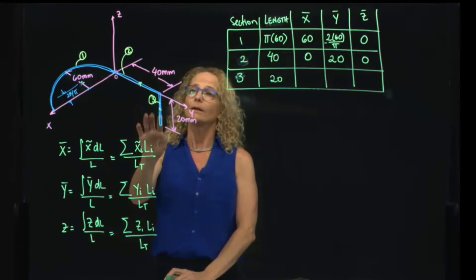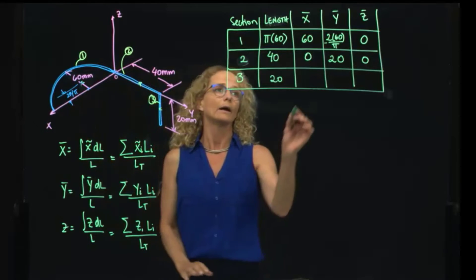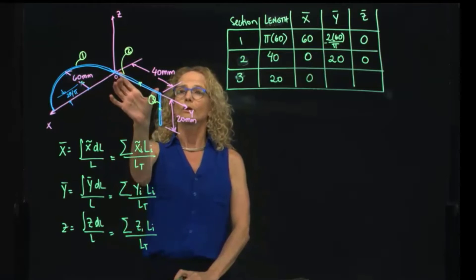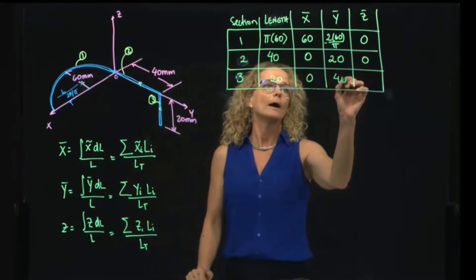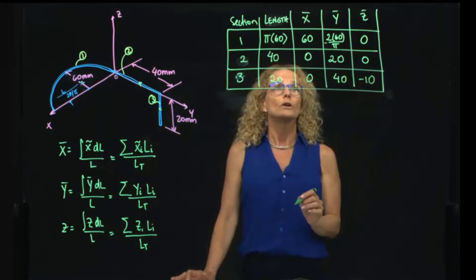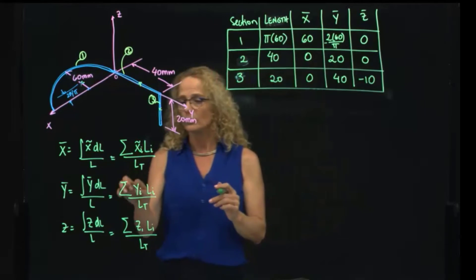And lastly, this one over here is in the plane zy. Therefore it has no coordinates in x. In y is located at 40, and in z is located at negative 10. So now that we have all the x, y, and z for each of those, as you see.